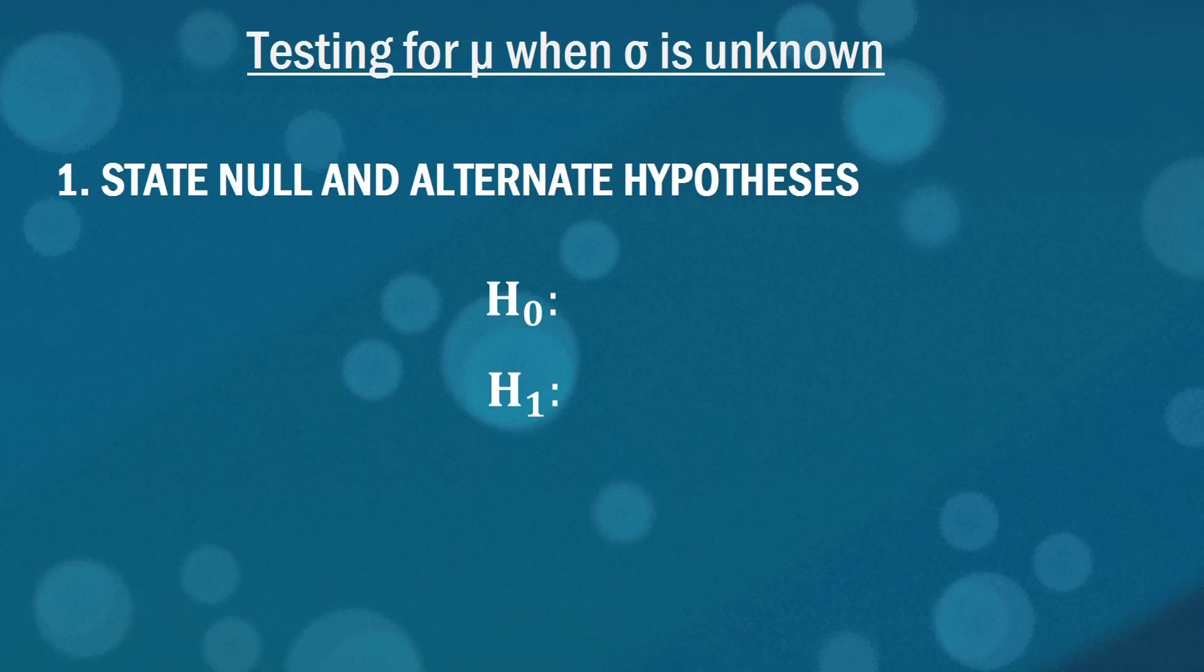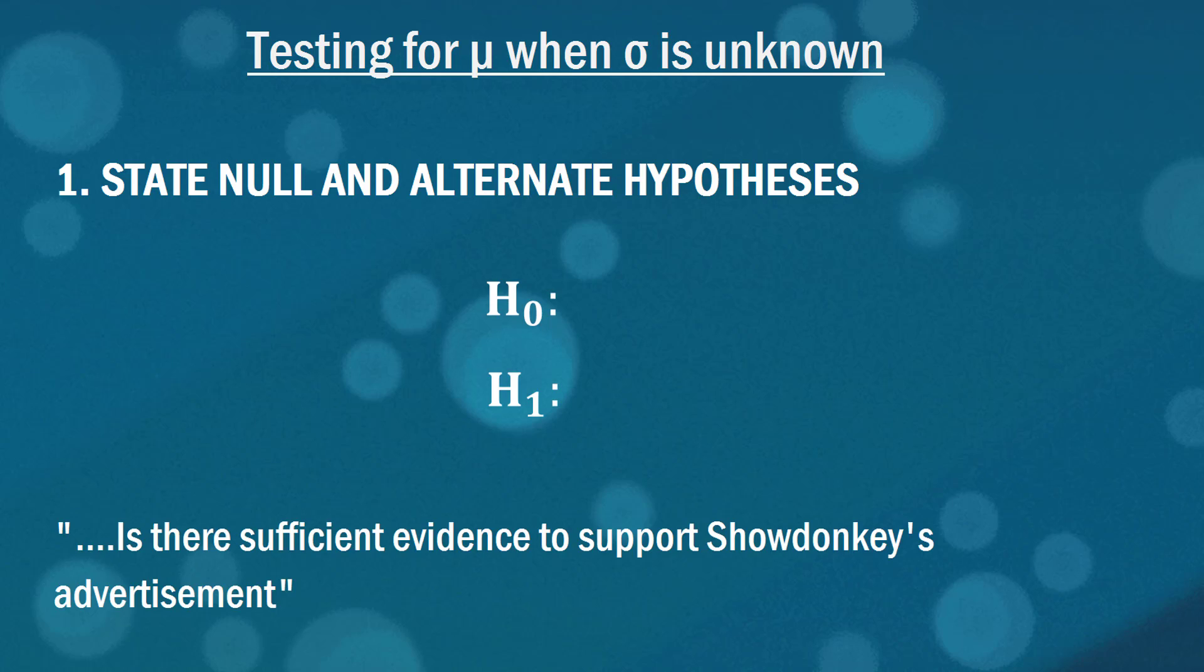My rule here is to always focus on the alternate hypothesis as this is where we put the statement that we are seeking evidence for. Here we're asked whether there's sufficient evidence to support Show Donkey's advertisement in which they say that their average delivery time is less than six hours. So that statement goes in our alternate hypothesis, leaving a mere equality in our null hypothesis.